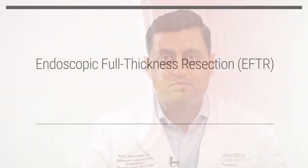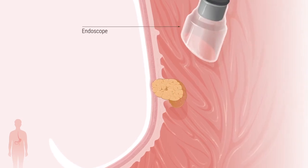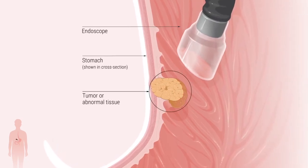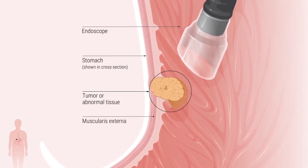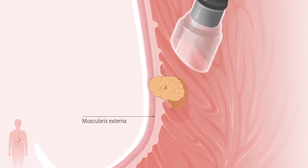In the following animation, we describe a technique for the resection or removal of abnormal tissue through the endoscope. Endoscopic full thickness resection is a complex procedure where a doctor uses an endoscope to remove a tumor in the stomach. The tumor extends to the muscularis externa, which is the outer layers of the stomach wall.